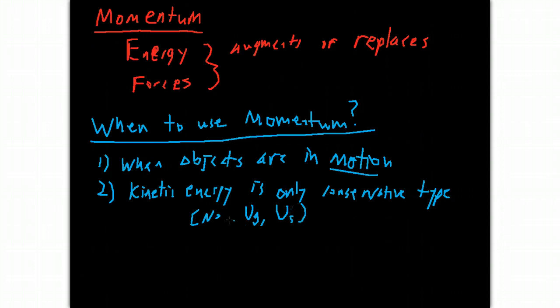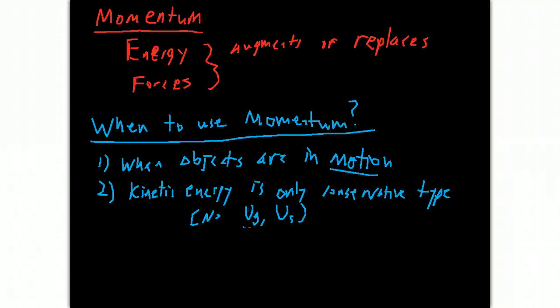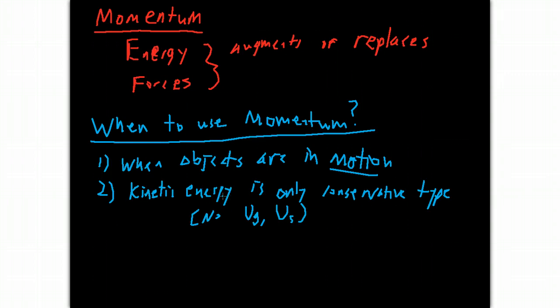We don't really use momentum in those cases. At least we can't use momentum by itself. So we might be able to use conservation of energy to convert gravitational potential energy into the kinetic energy of an object. And then if that object collides with something else, we would throw in a momentum situation. But if there is spring potential energy or gravitational potential energy, it doesn't normally pay to use kinetic energy.